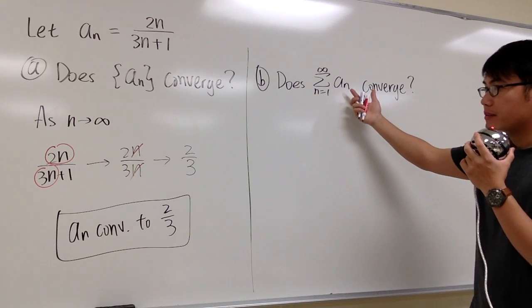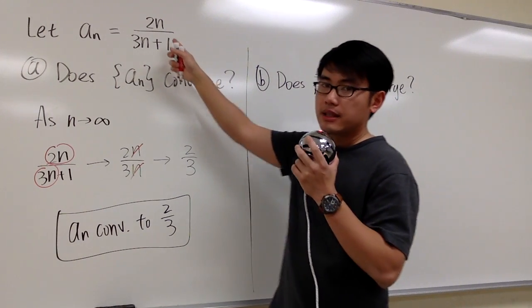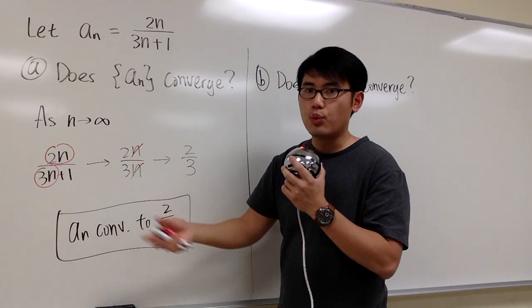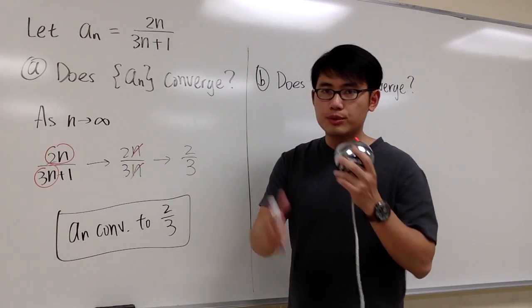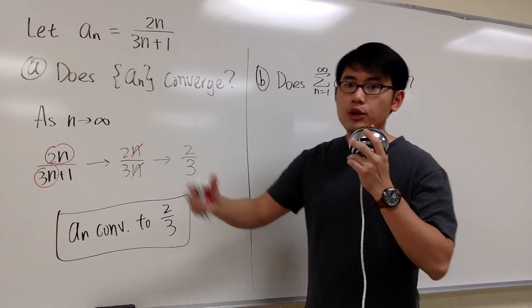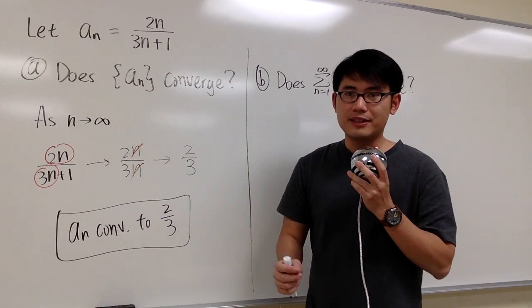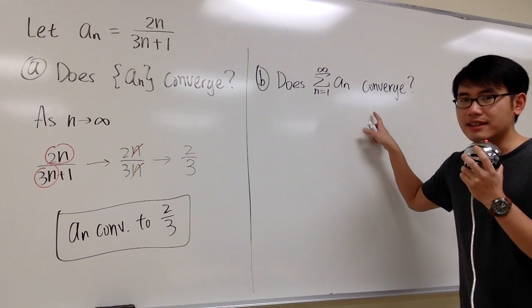So we're talking about a_n again. In other words, if you look at these values, plugging n equals 1, n equals 2, and they produce a bunch of values, and then you're trying to add them up, do we have a finite sum? That's what this question is asking us.